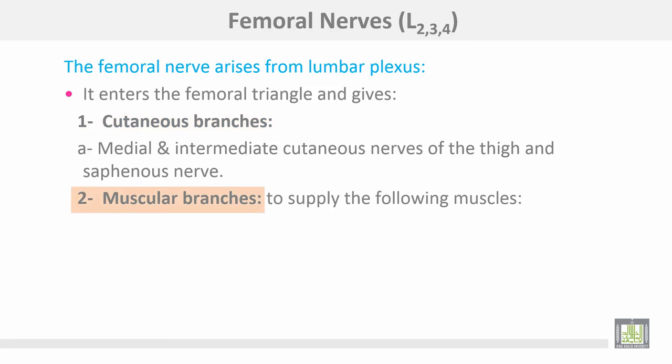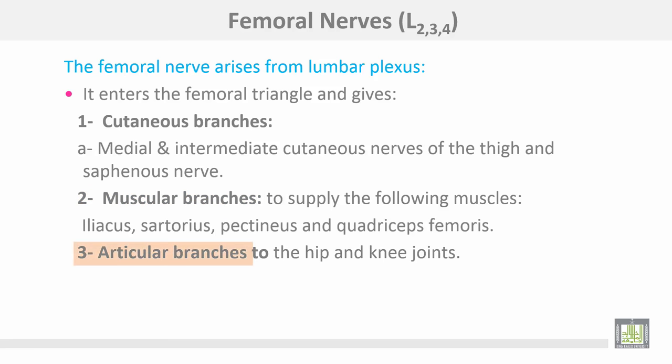Muscular branches of the femoral nerve supply the following muscles: iliacus, sartorius, and pectineus. Articular branches go to the hip and the knee joints.